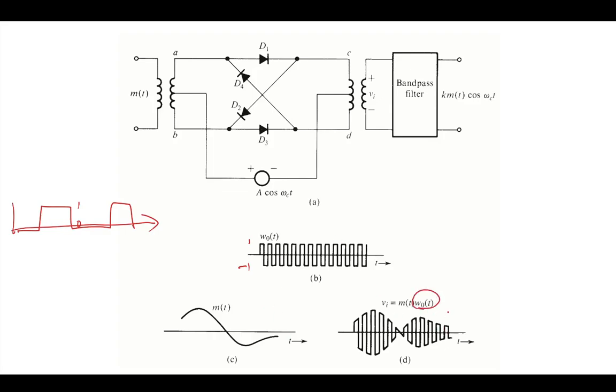So this is actually also going to give you a Fourier series where each term is at some cosine and omega c. And so that means that you'll have at least one term that is exactly at your carrier of interest.